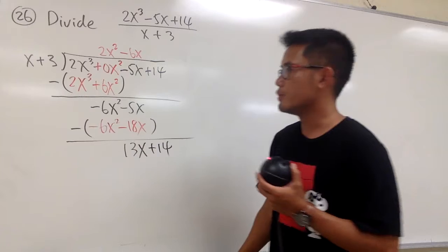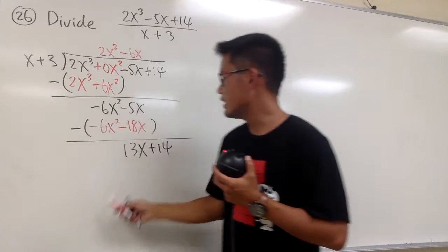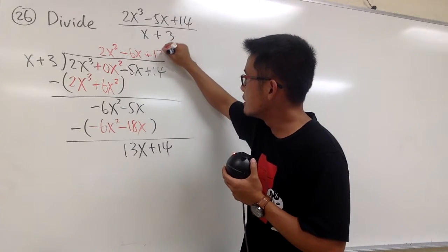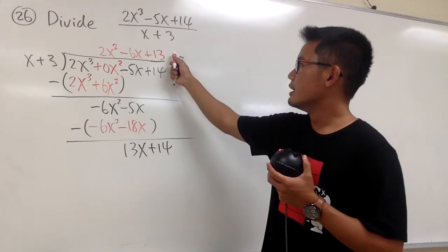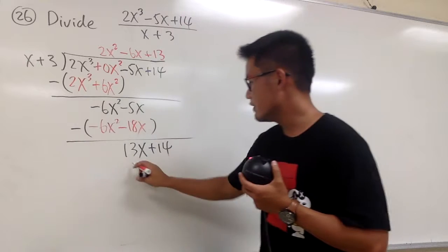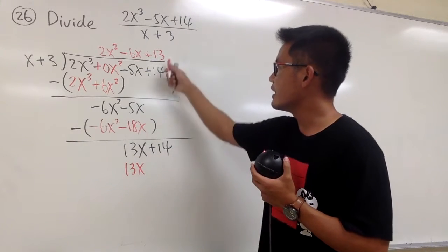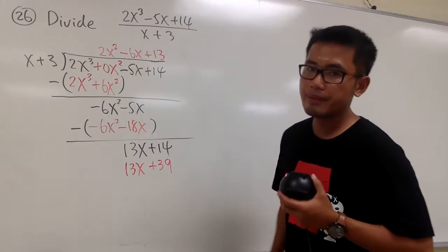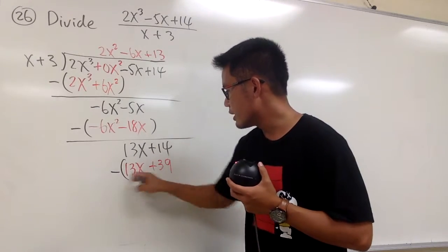At the end, you ask yourself, 1 times x will give us 13x. Well, we just need to have a plus 13, isn't it? 13 times x will give us 13x. And then, 13 times 3 will give us positive 39. And at the end, don't forget to subtract again.